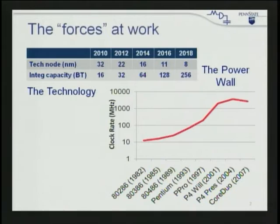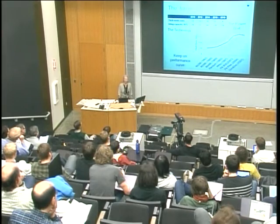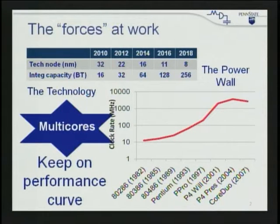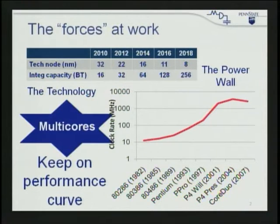Clock frequencies have actually flattened, if not come down slightly. We've got all these transistors and we'd still like to keep performance going up. What are we going to do with all those transistors to deliver performance if we can't continue to crank the clock up? The answer has been: put multiple cores on the chip, and leave it to the programmers and operating system to make sure they're all cranking full speed ahead to get the doubling of performance. Next year, put twice as many cores on there.